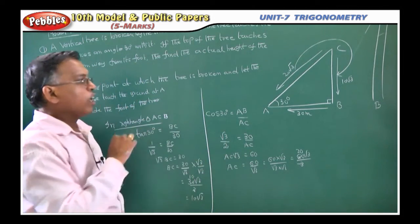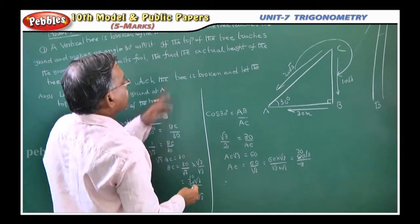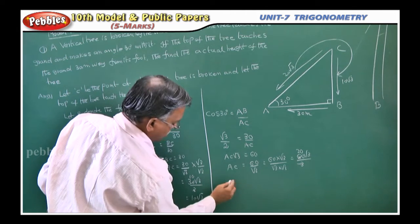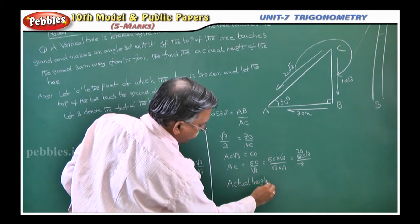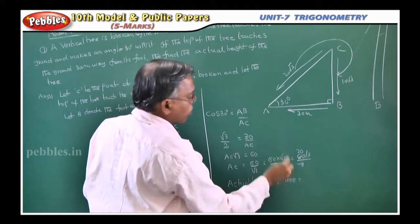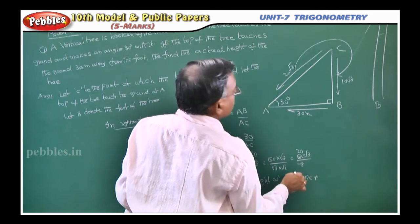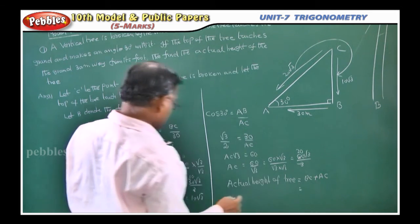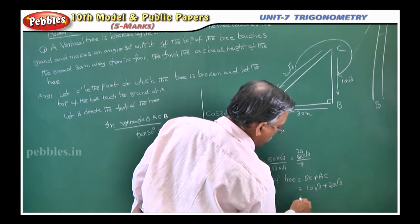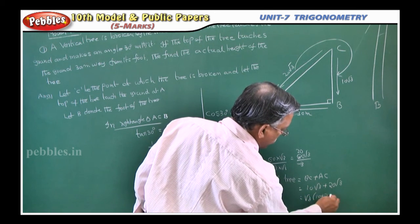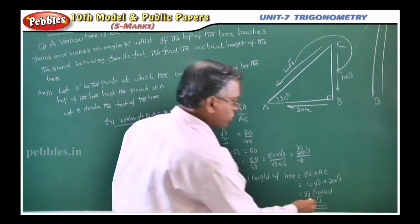Now can you tell what is the total height of the tree? Nothing but BC plus AC. Therefore, actual height of tree is equal to this part and bended part: BC plus AC. What is BC you got? 10 root 3 plus AC you got 20 root 3. Root 3 you take common, 10 plus 20, 30. So it becomes 30 root 3. That is your answer, 30 root 3 meters.